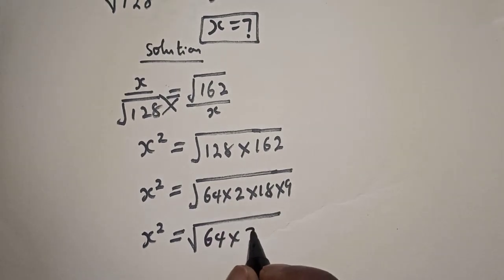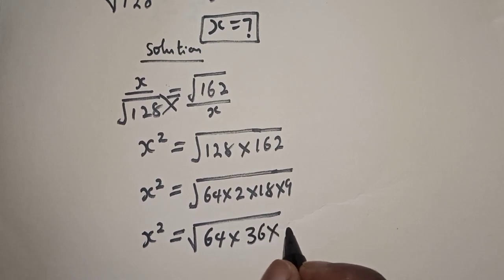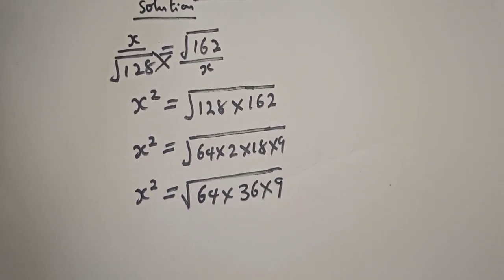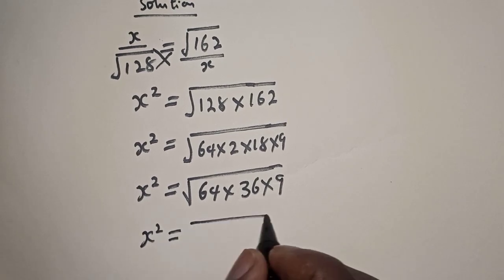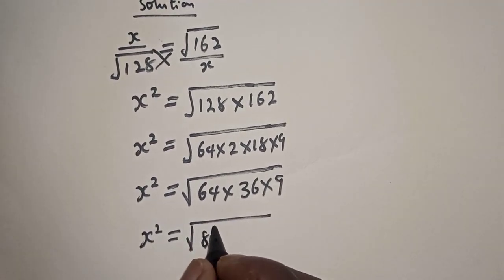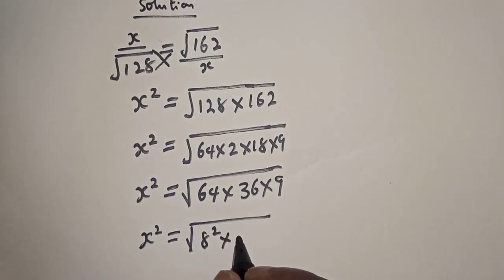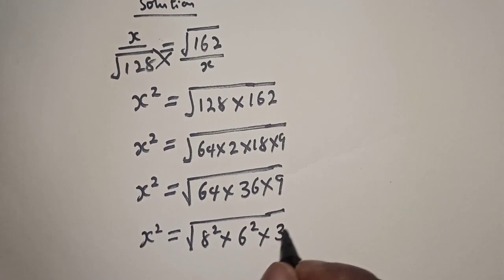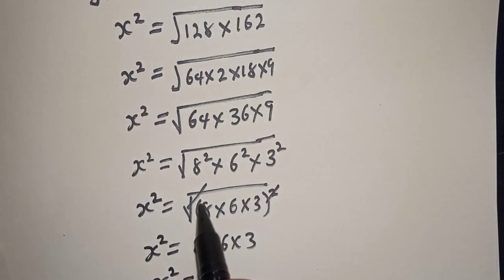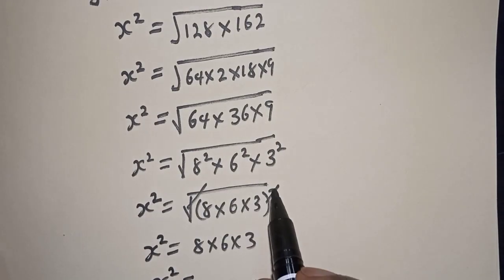And x squared is equal to square root of 64 is 8 squared, multiplied by 36 is 6 squared, multiplied by 9 is 3 squared. x squared is equal to square root of 8 times 6 times 3, and this will cancel. So x squared is equal to 8 times 6 times 3.